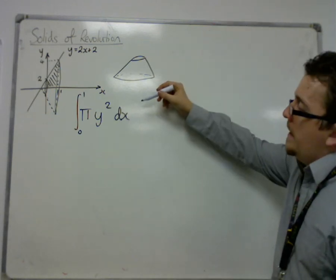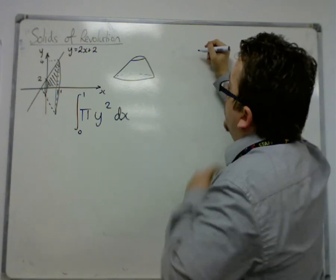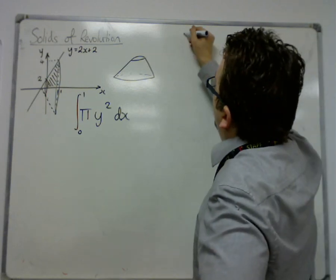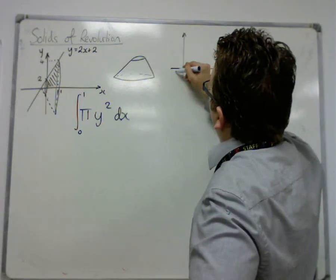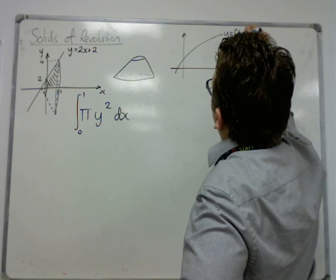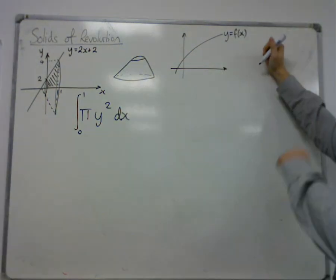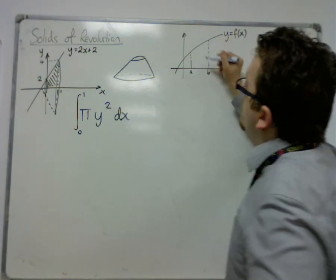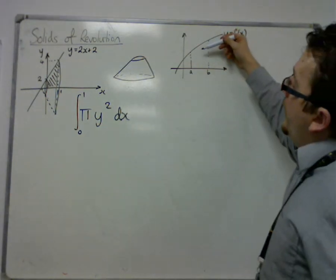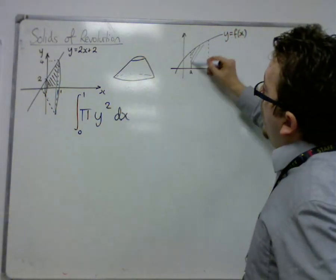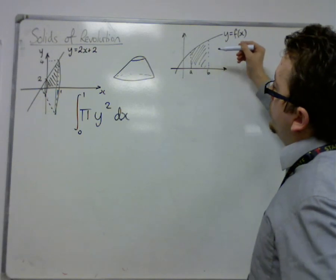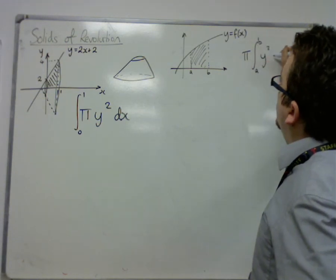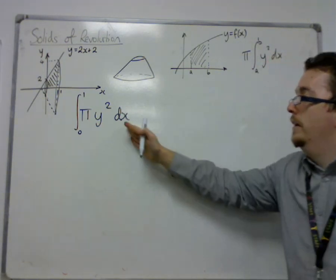So what we're doing here is that if you had this, this is y is equal to f of x, and you want to work out the volume that is formed when I rotate this area about the x axis, then this is given by pi y squared between a and b dx. So what we have here.